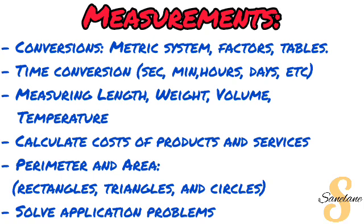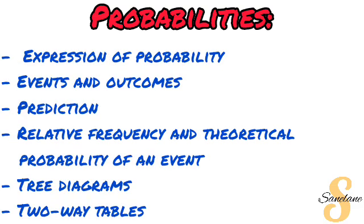For Measurement, the most important skill is conversions — metric system conversions, conversion factors, and conversion tables, knowing whether to divide or multiply. Also be able to convert time, measure length, weight, volume, and temperature, calculate the cost of products and services, and work with perimeter and area of a rectangle, triangle, and circle — a square is implied. Be able to solve application problems as well.